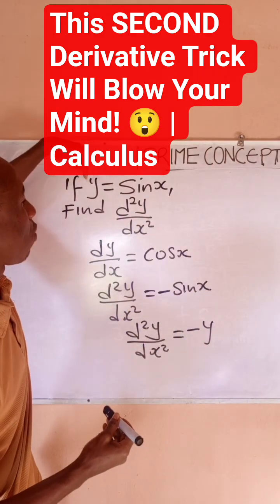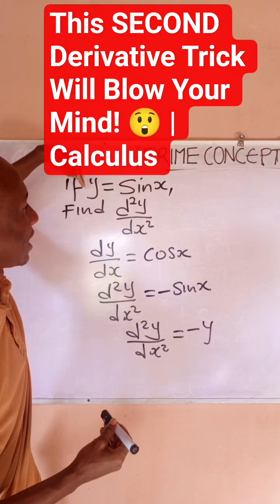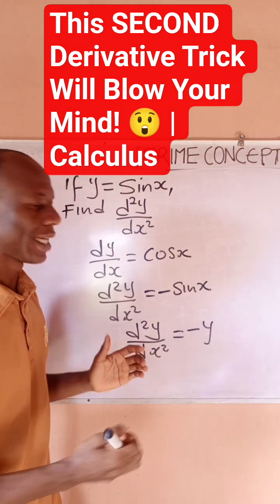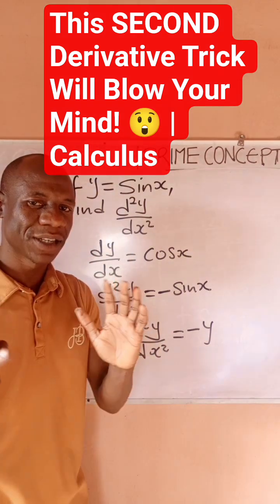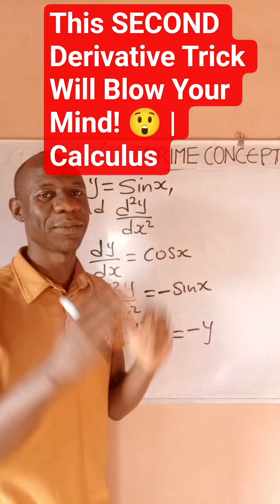Why is this so? Because our y is this, so meaning that negative y is negative sine x. I believe this is very clear to you. Thanks for watching Prime Concept.